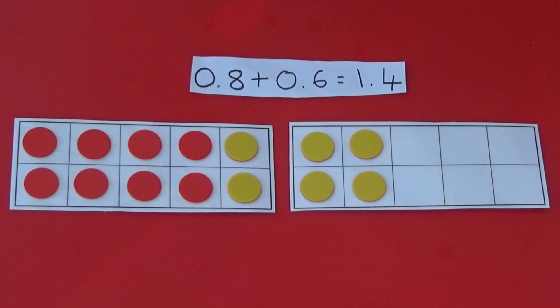We can do the same to help us add decimal numbers. This time, my tens frames are worth one and each square is worth one-tenth.